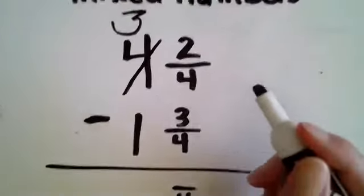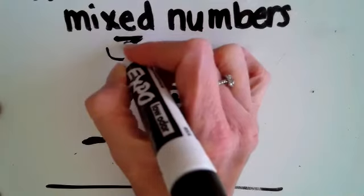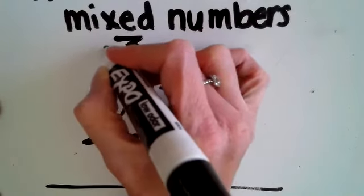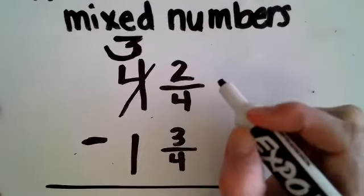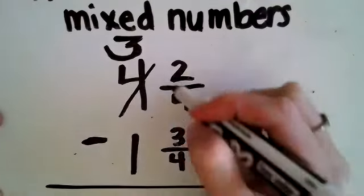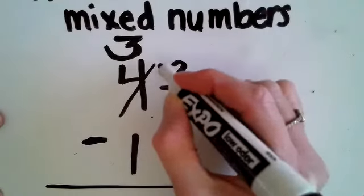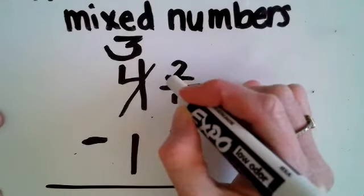Three. Okay? When I took that four and made it a three. What I'm really doing and what I can't do is when we did this with whole numbers you would just put a one here. Right? Because you took a set of tens over and you put a one. That doesn't work with fractions.